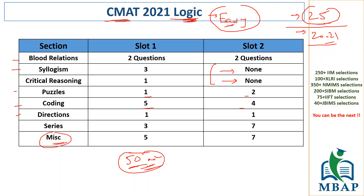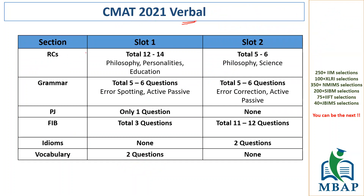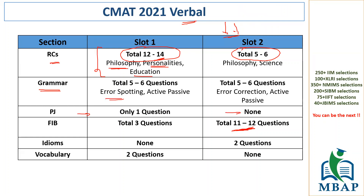Coming to the verbal section for CMAT 2021 — slot two people are not happy. Slot one had more number of RCs while slot two had less. The challenge was that slot two had more FIBs (fill in the blanks), which require good vocabulary. If you don't know those words, you could not do anything. People complain that with more RCs they could read the passage and answer, but the RCs on personality and education required a specific knack for reading those articles.